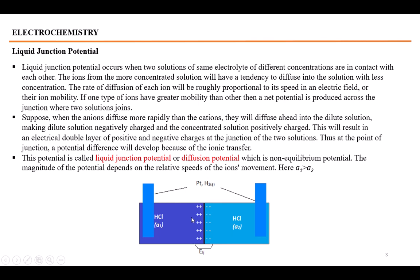H+ and Cl⁻ ions will move from higher concentration towards lower concentration. If one ion has greater speed or greater mobility than the other, it moves faster, leaving charge behind. For example, if the mobility of chloride ions is greater, they move rapidly towards the right-hand side solution, creating a net negative charge on the right and a net positive charge on the left. This forms a double charge layer at the junction, called liquid junction potential.